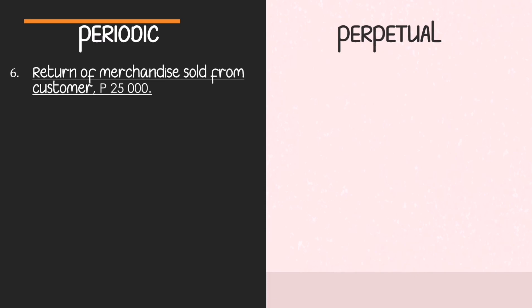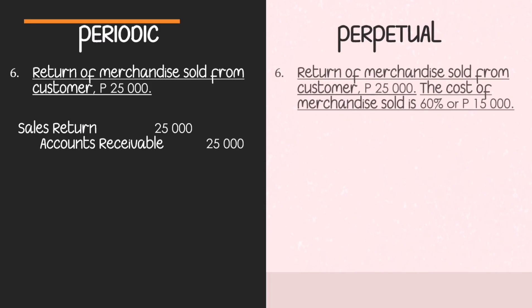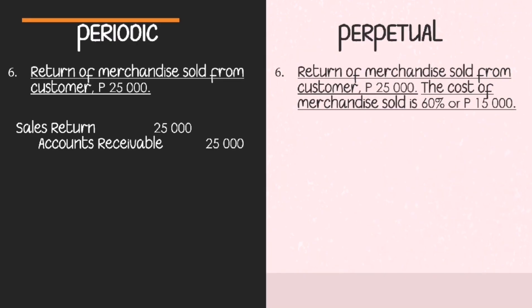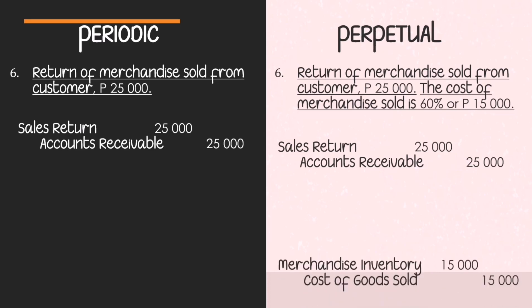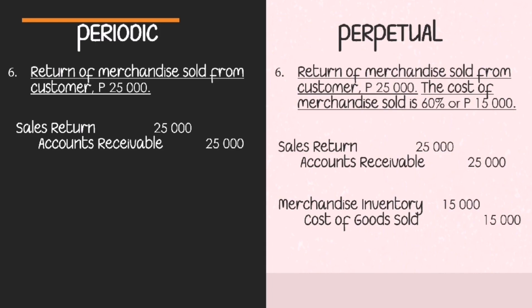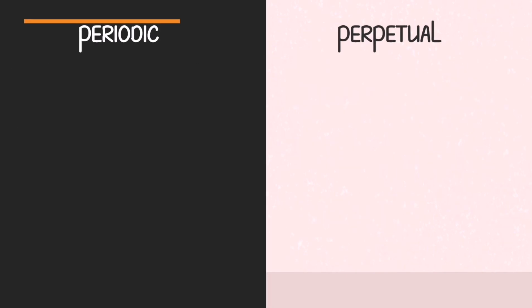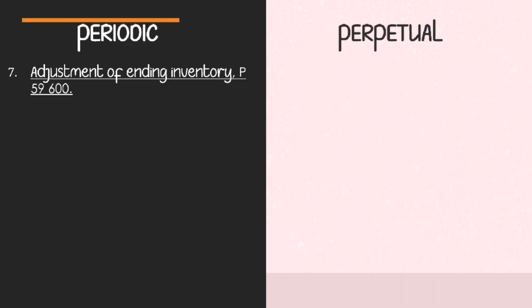Next transaction: return of merchandise sold from customer amounting to 25,000. Under periodic: debit Sales Return, credit Accounts Receivable 25,000. Under perpetual, the same sales return entry is made, but there is an additional entry: debit Merchandise Inventory 15,000 (60% cost) and credit Cost of Goods Sold 15,000, since the returned items are added back to inventory.